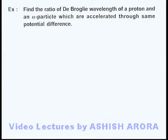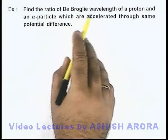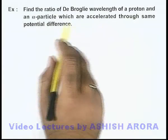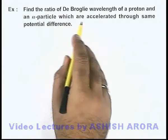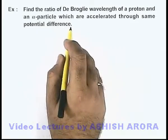In this example, we are required to find the ratio of de Broglie wavelength of a proton and an alpha particle which are accelerated through the same potential difference.